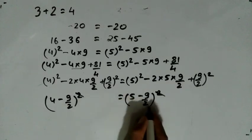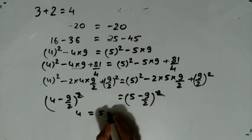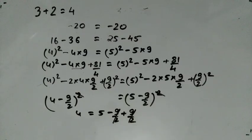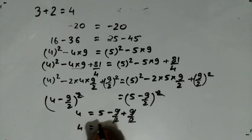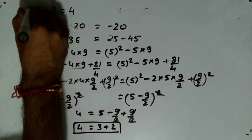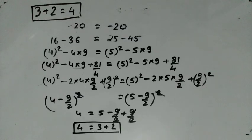और 4 minus 9 upon 2 is equal to 5 minus 9 upon 2। तो 4 minus 9 upon 2 को उस side लेकर जाता हूँ: 4 is equal to 5 minus 9 upon 2 plus 9 upon 2। और minus 9 upon 2 से plus 9 upon 2 cancel out हो जाएगा। So 4 is equal to 5। अब इस 5 को लिखता हूँ: 4 is equal to 3 plus 2 — that means 3 plus 2 is equal to 4, जो मैंने starting में बोला था। यह एक simple mistake है।